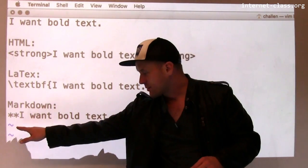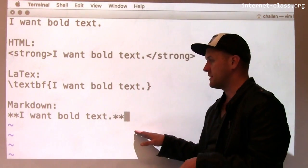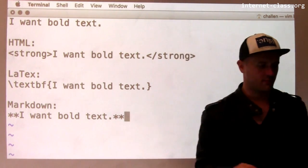So Markdown will find the double stars in your document, determine what text is in between them, and make that text bold. This is how it looks in Markdown.